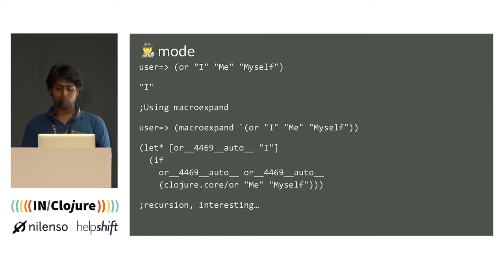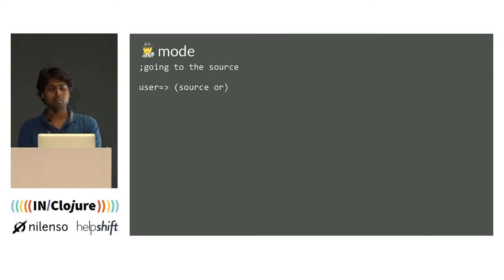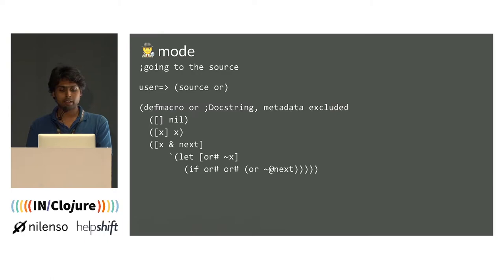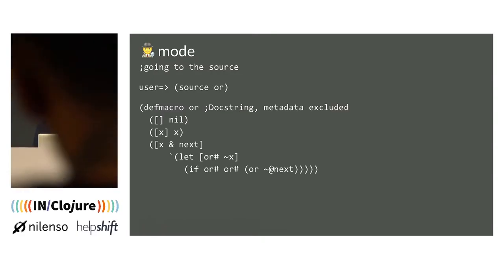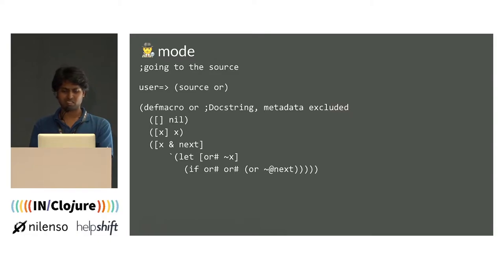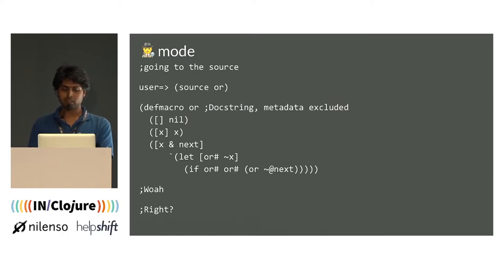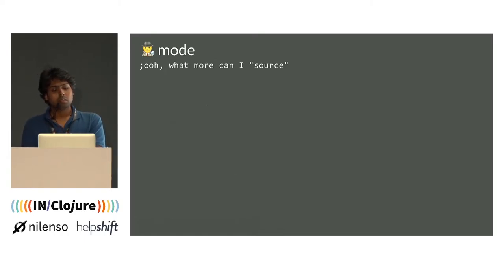Going to the source again: the helper function `source` in Clojure allows us to access and view the source code of a function or symbol. This is the abridged definition of OR. Looking at the last part of the form, there's an ampersand next, syntax quoting, let, OR hash, tilde X, OR hash, OR hash, tilde at-rate next — which looks understandable, though a little overwhelming to start with. Now that I've found the `source` utility function, let's try expanding `when`.